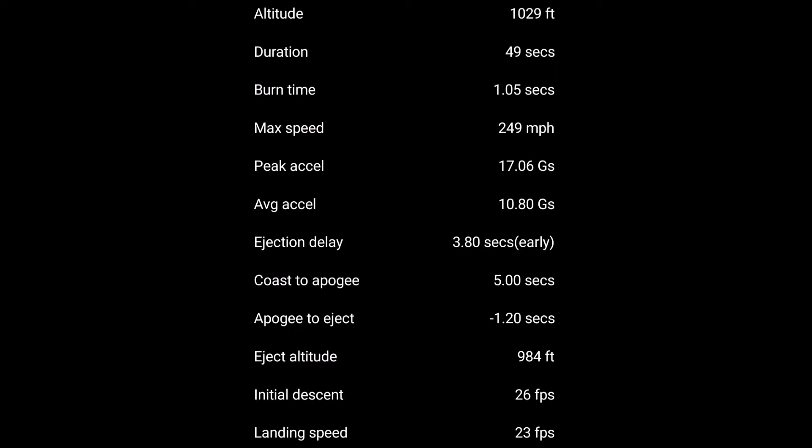So the max speed was 249 miles per hour, which was significantly faster than the first rocket, which had a max speed of 190 miles per hour. And the peak acceleration of this second rocket was 17 Gs, which is a lot higher than the roughly 5 Gs of the first rocket.